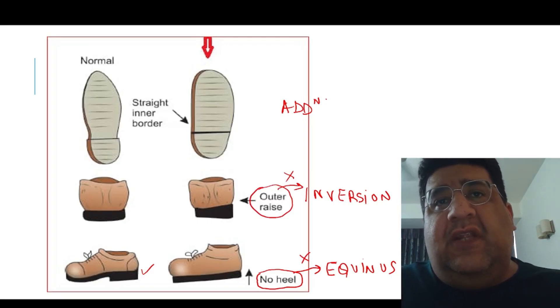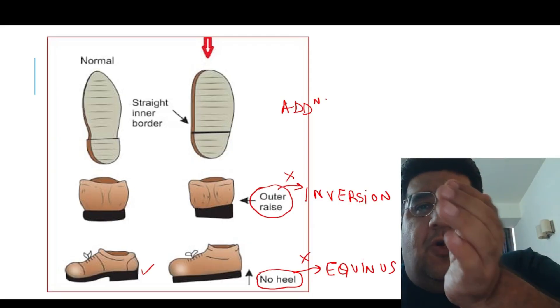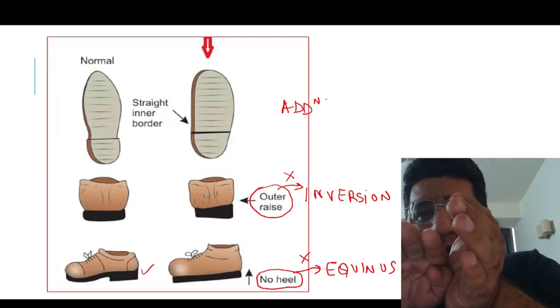The third deformity we deal with is adduction at the forefoot. Normally every shoe has a slightly curved inner border. If you have a curved inner border, there is a possibility of the forefoot going into adduction. Do we want that to happen? No.